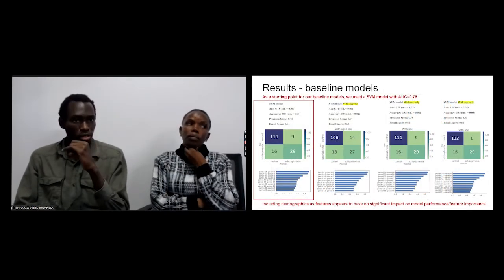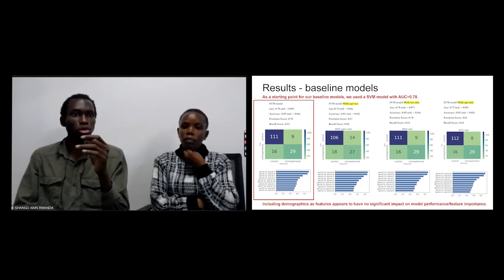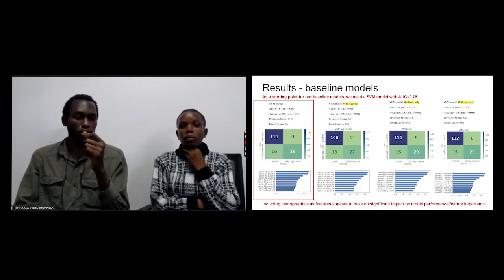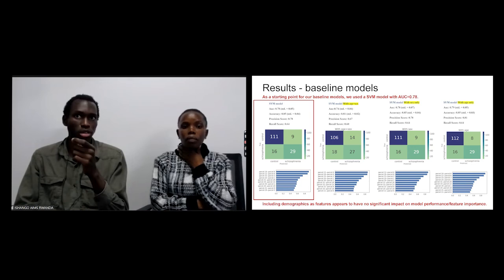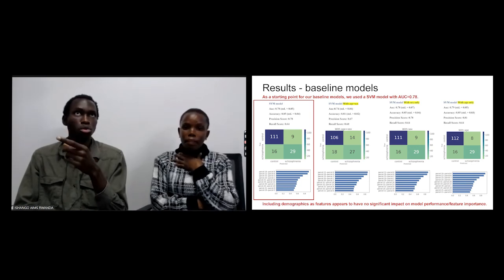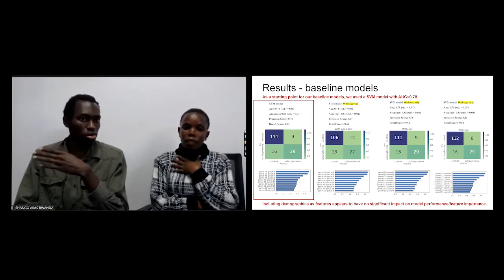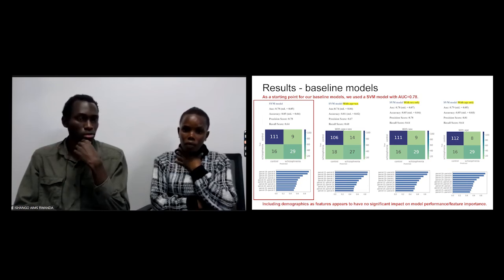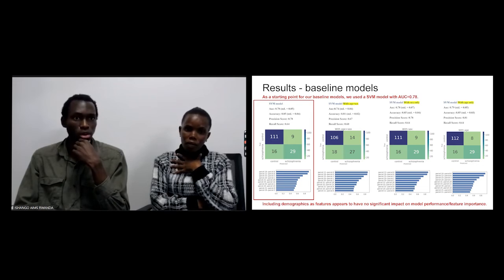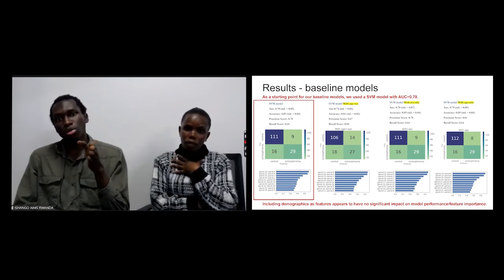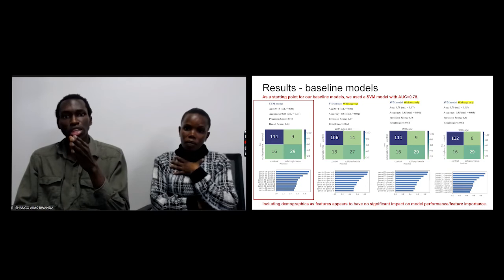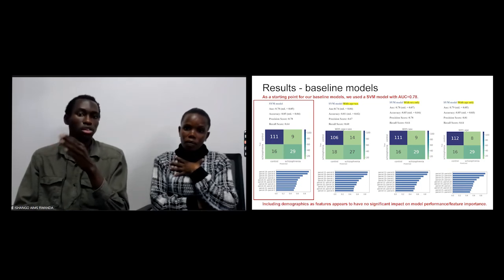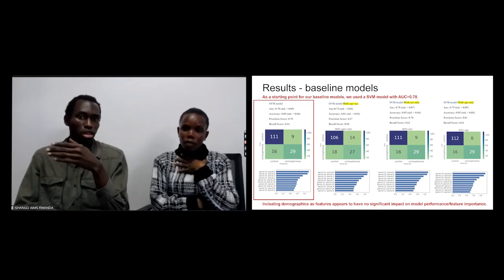This is the result from our baseline model. The best model we have is support vector machine with linear kernel. We used XGBoost and random forest, but in the end this was the best model with 85% accuracy and area under the curve was 78%. We used the same model with age and sex features, and we realized there is no big change in the performance.